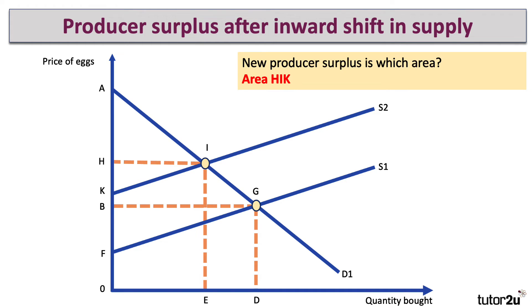This is good analysis to use if you get a question on the impact of higher costs on producers, because typically the producer surplus goes down. HIK is clearly smaller than BGF.